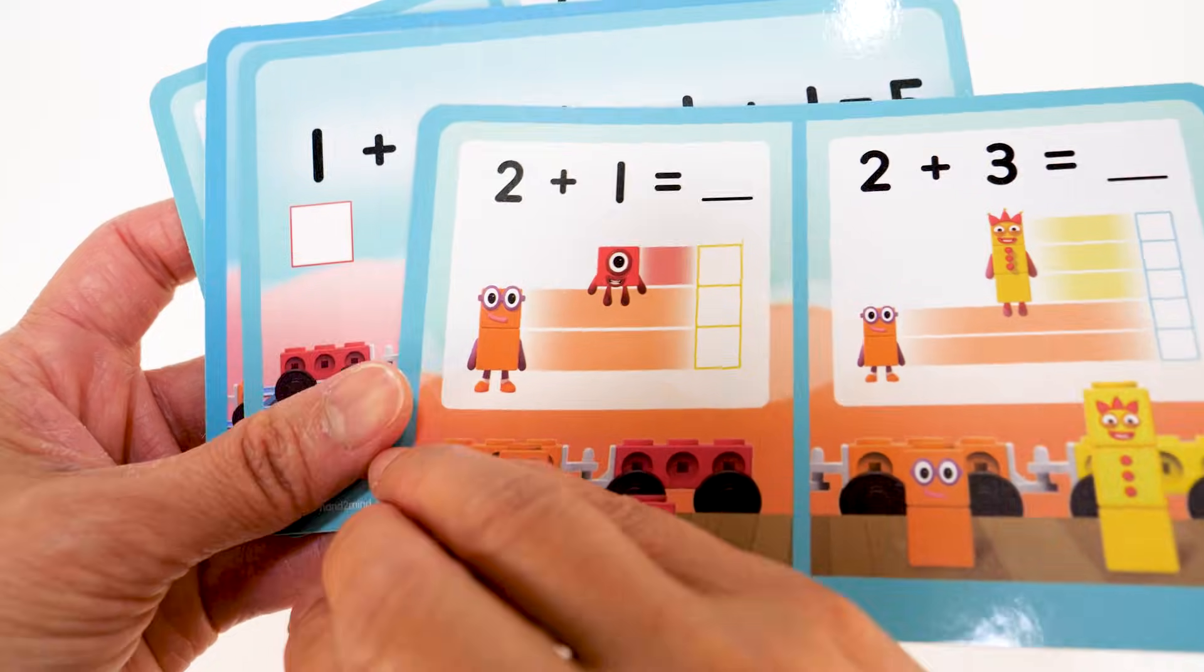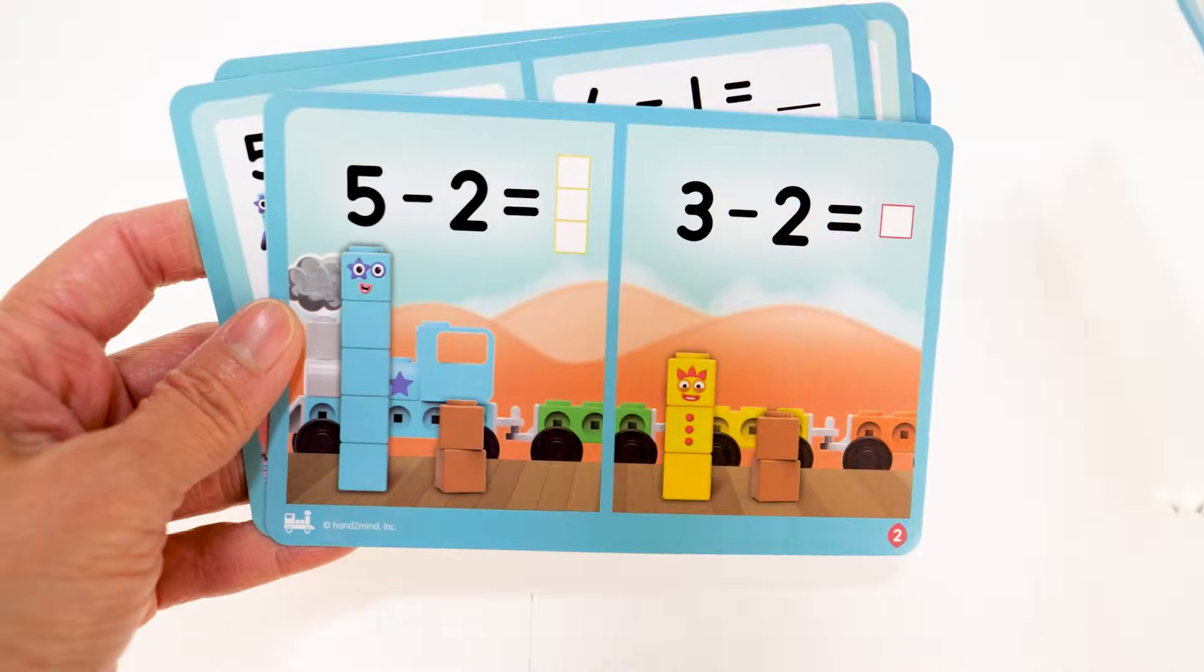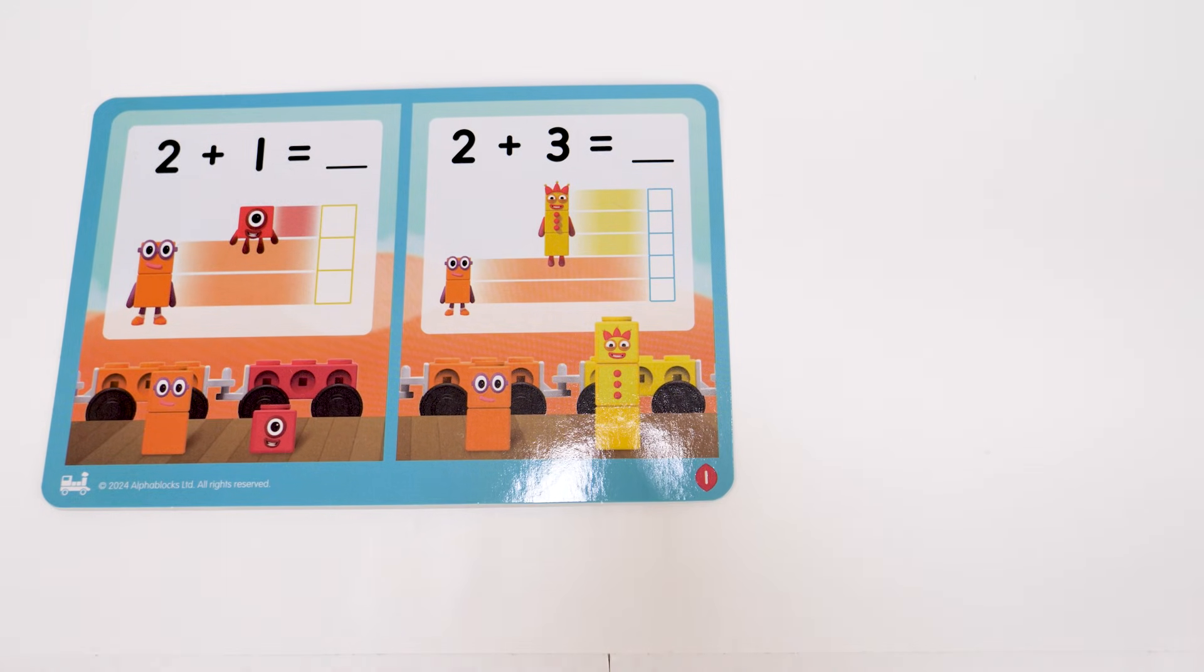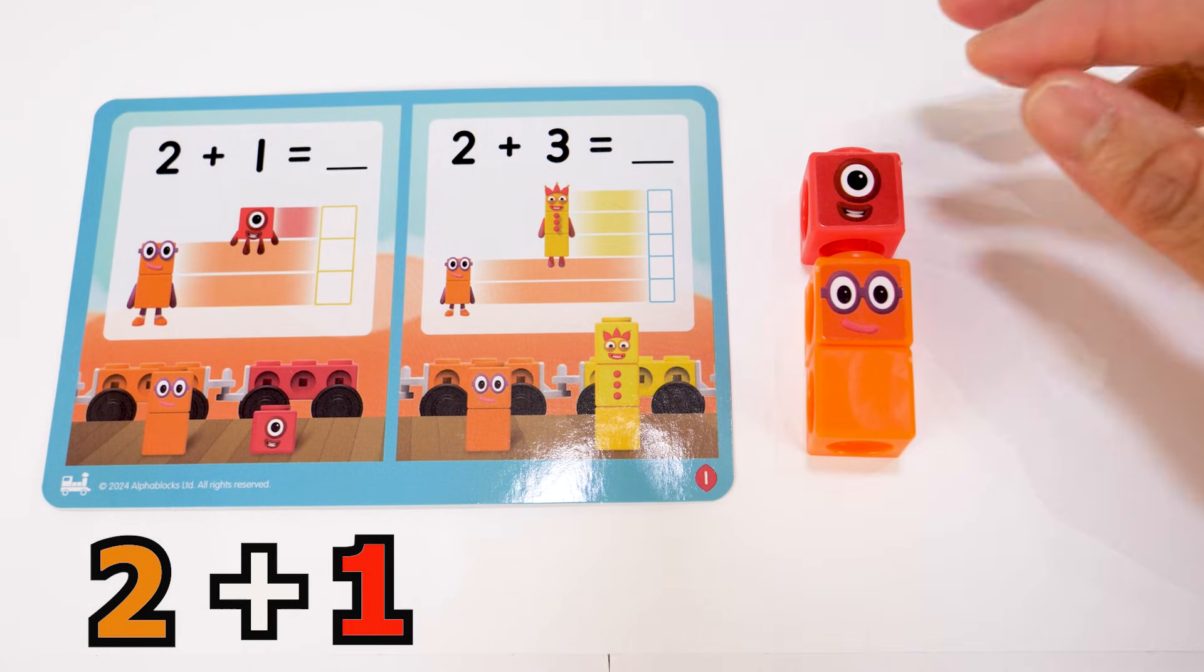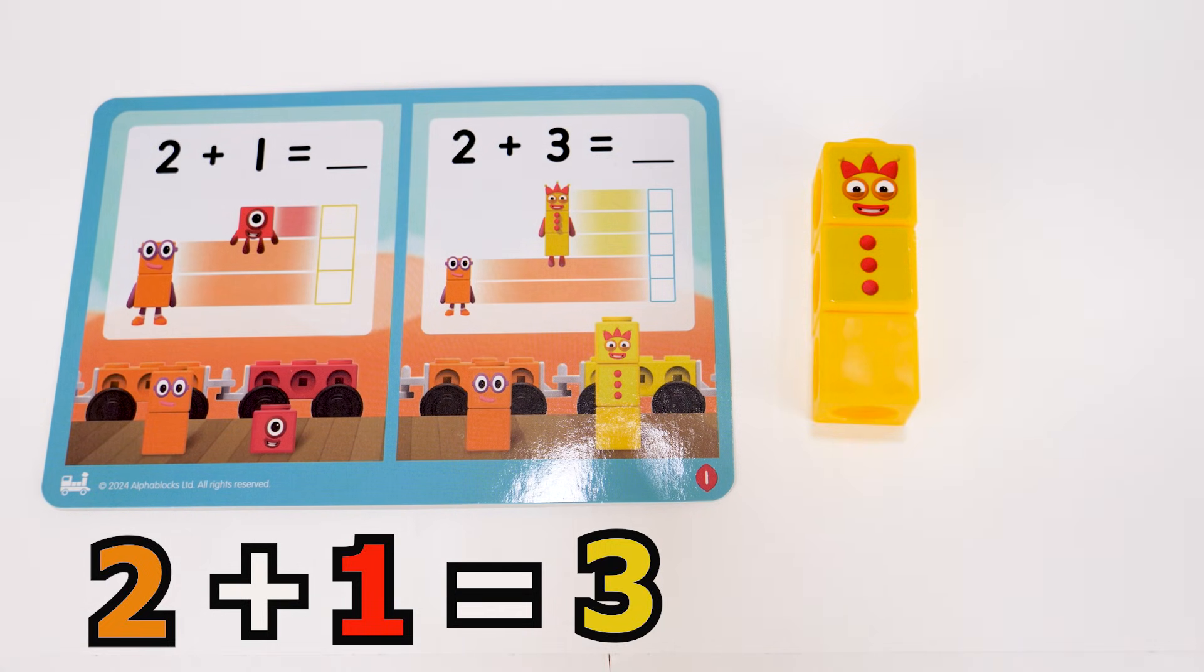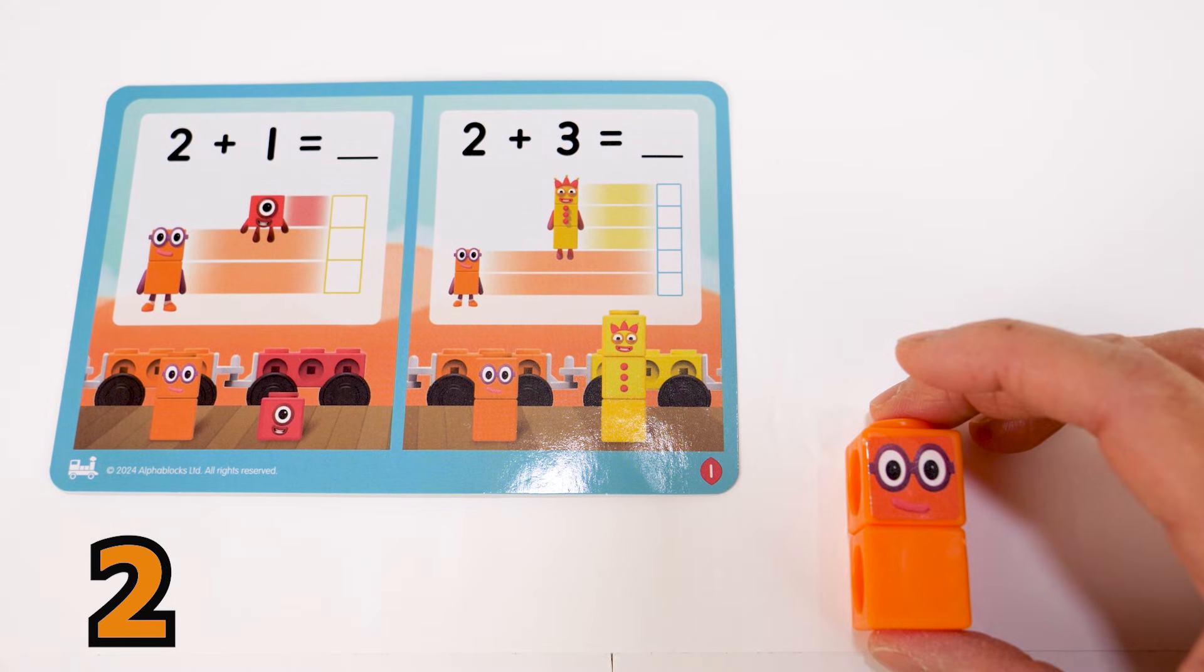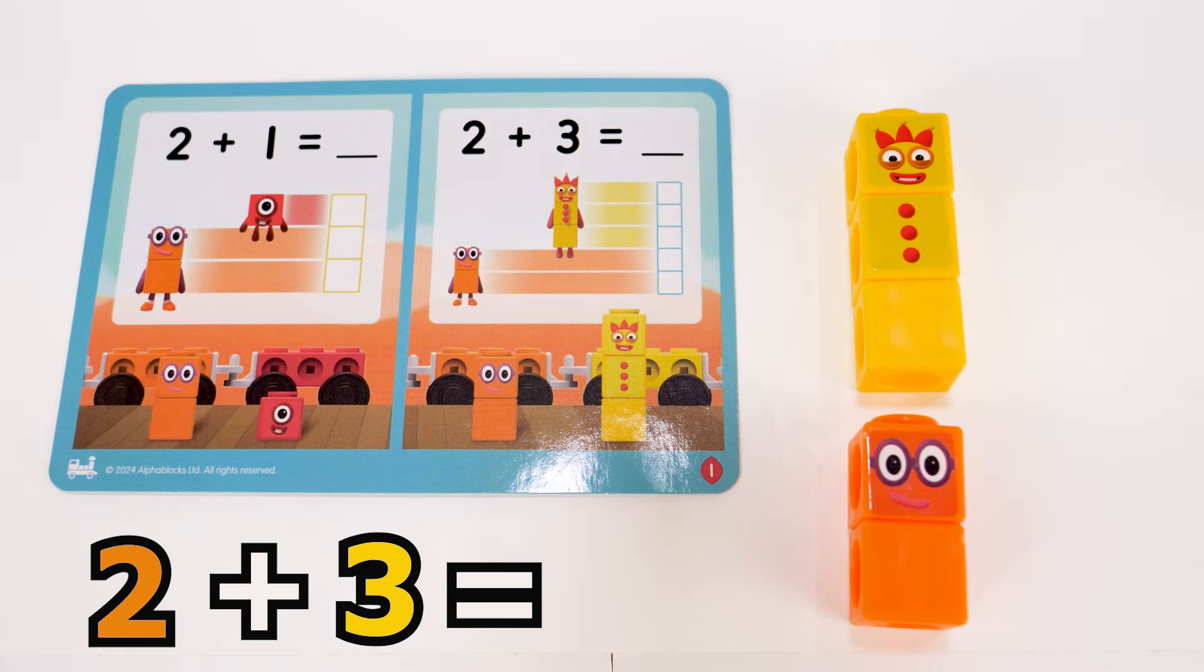Now let's look at some of the activities which come with the activity set. Let's try this addition. Here we have two plus one equals three. Let's try the next addition. Two plus three equals five.